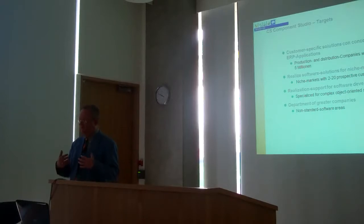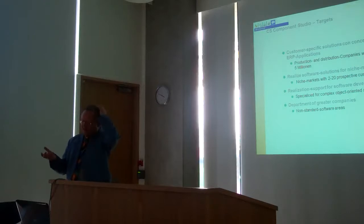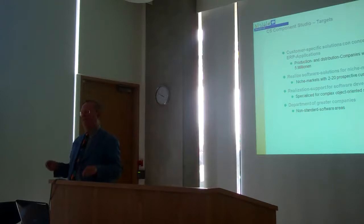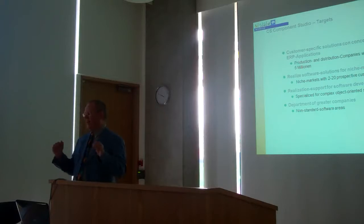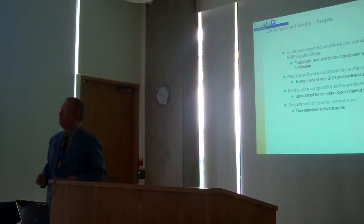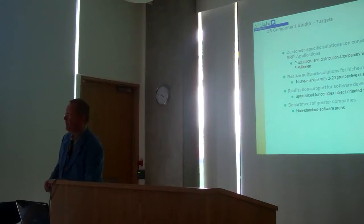The targets of this system have been production and distribution companies with revenue starting at the mid-million level — not the very small one-person shops, and not the very big players. Reasonable companies starting at maybe 40 to 50 people, up to around a thousand people — that range. And the goal is to go for specific niche markets where there are special needs.